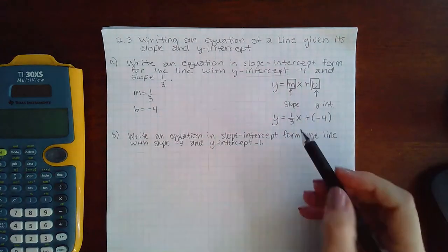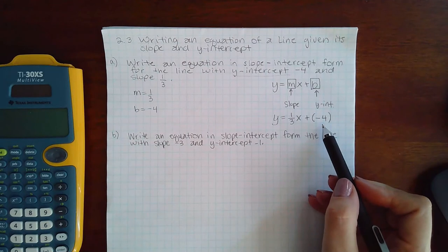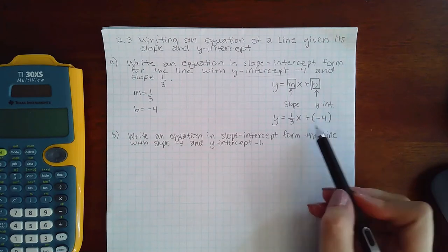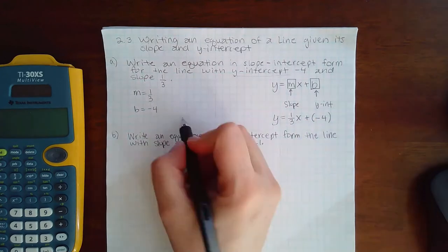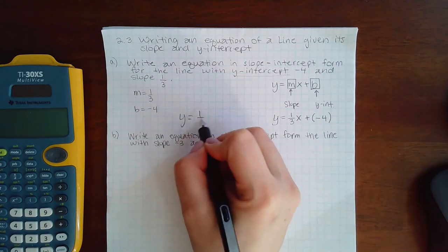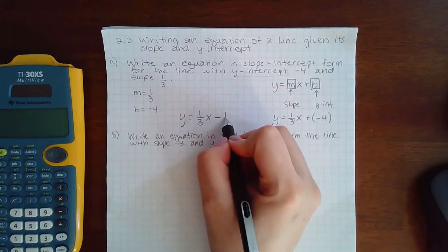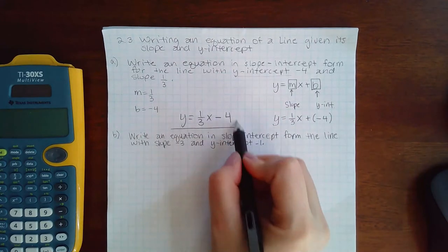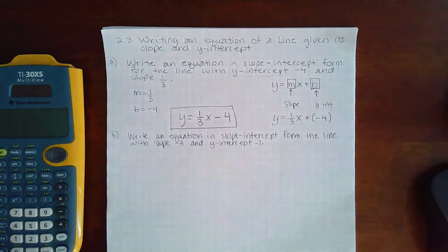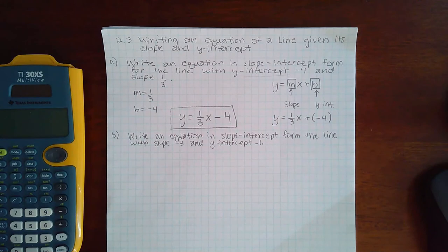I can type this in as my answer or clean it up to come up with the more formal answer, because a positive times a negative is actually going to be a negative 4. So this would be the formal response for the equation of that specific line. Now part b is very similar.